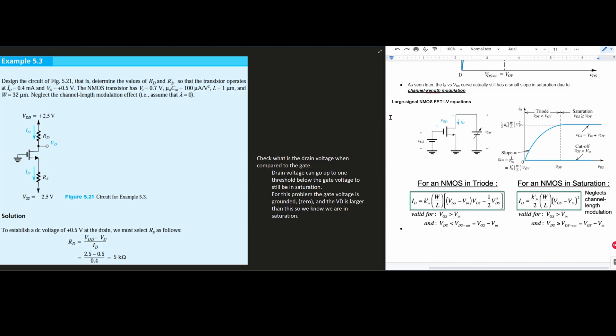We're going to be looking at example 5.3. In example 5.3 we need to design the circuit of the figure and determine the values of RD and RS so that the transistor operates at ID equal to 0.4 milliamps and VD of plus 0.5 volts.